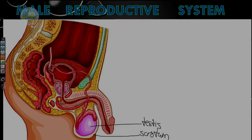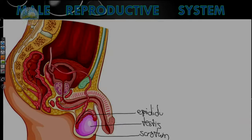Inside of that scrotum, we have a very important structure known as the testis. Males have two, but because it's a longitudinal section, you're only seeing one. The testis contains developing sperm and also secretes an important hormone called testosterone. There's a coiled structure at the top of the testis, and this is called the epididymis.